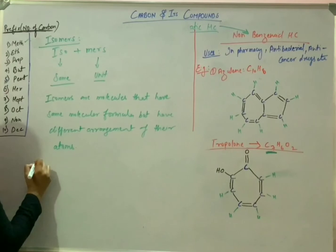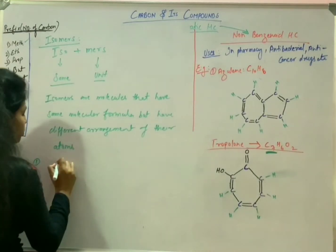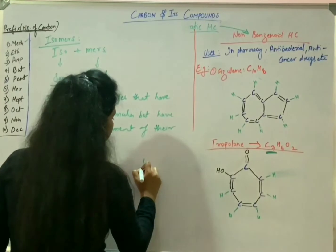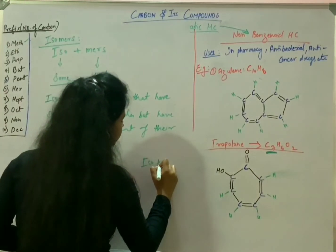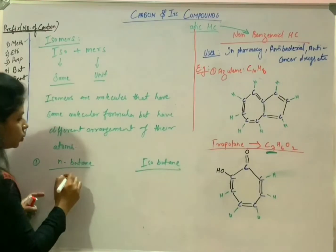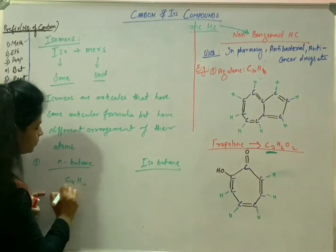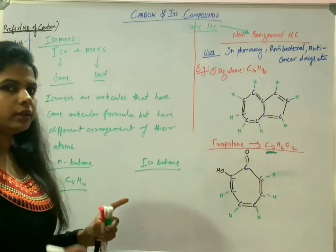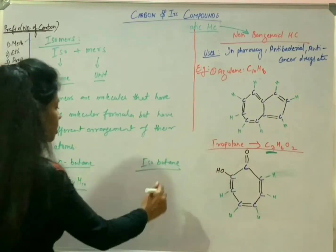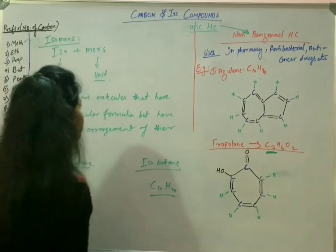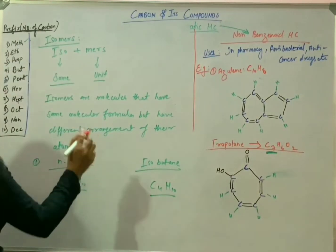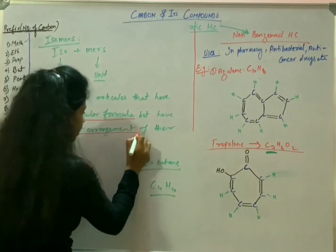For example, normal butane and isobutane. Normal butane has the formula C4H10. The formula is the same for both cases — whether normal or isobutane, it is C4H10. So the molecular formula is the same, but the arrangements are different.